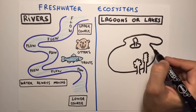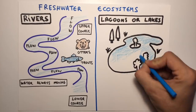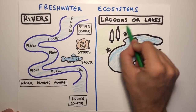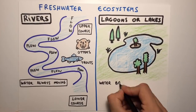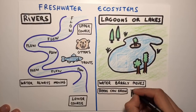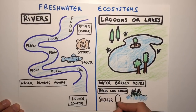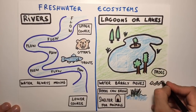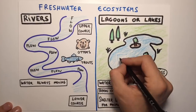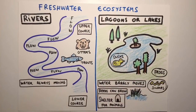In lagoons, the water barely moves, so some plants, like reeds, can grow. Vegetation provides shelter for birds like herons and ducks. Lagoons are also home to frogs, water snakes, and water beetles.